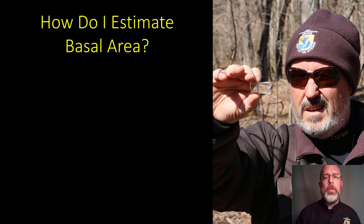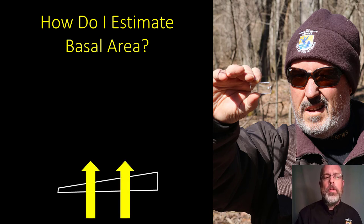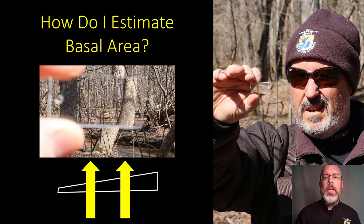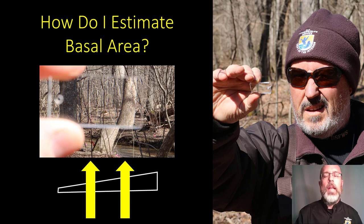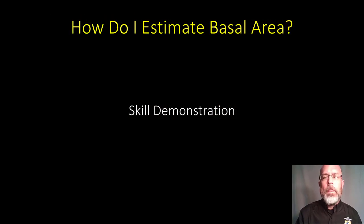You can see this gentleman here holding up a cruise prism. But how does it work? A cruise prism is a piece of glass that has an angle to it, so it refracts light in different ways. When you look through it, it offsets the trees that you're looking at. So it offsets it — now what do I do? This is where our skill demonstration comes in: exactly how to estimate basal area. And this is a several-step process.